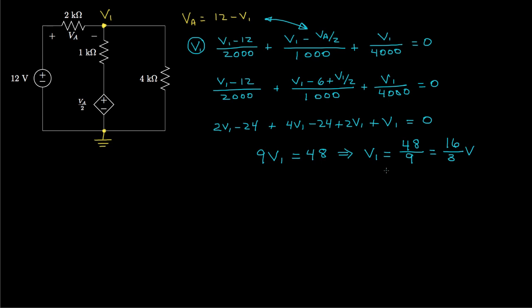Once we know V1, we can determine VA through that equation and calculate any of the currents through any of the resistors.